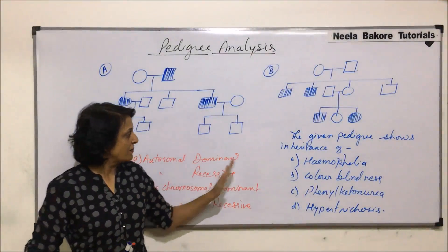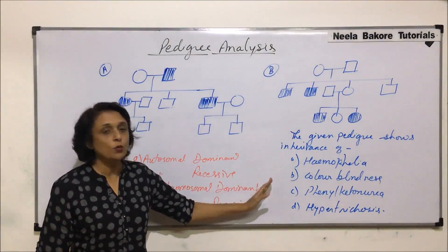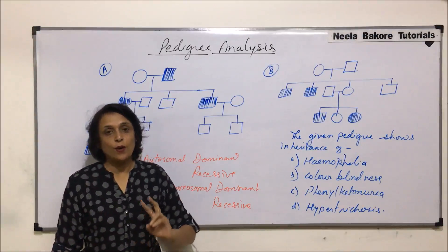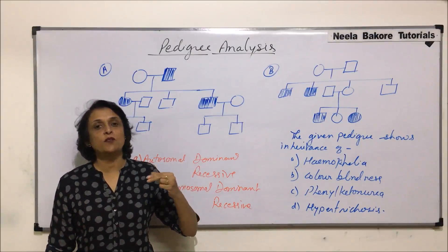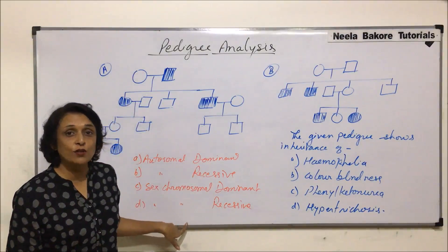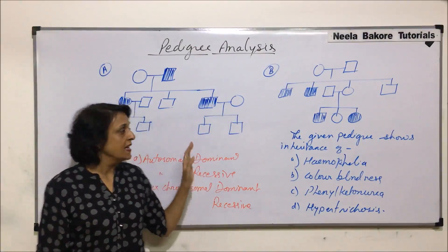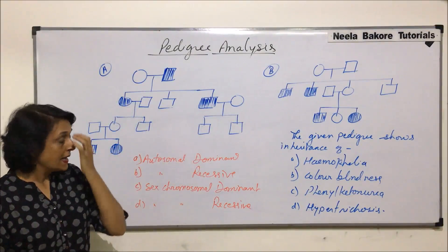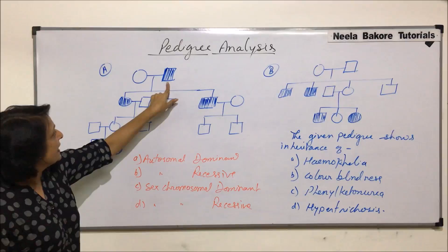In this segment, two pedigrees have been drawn rather than two questions. Previously, we were using questions to plot pedigrees; now we are trying to conclude something just by looking at these pedigrees. There are two questions, so let us take the first one.